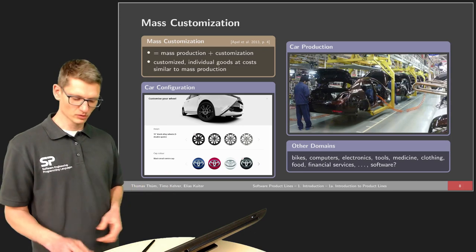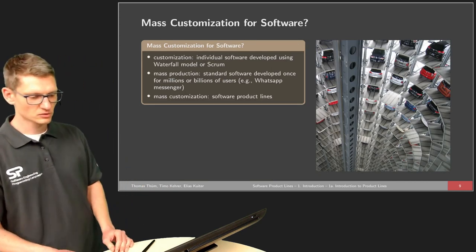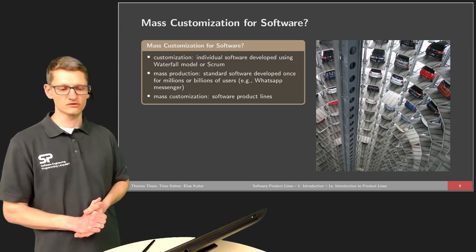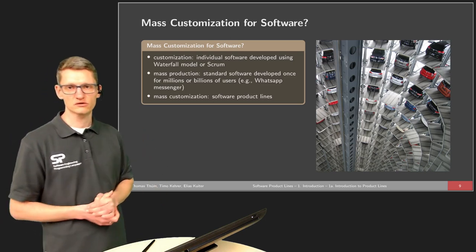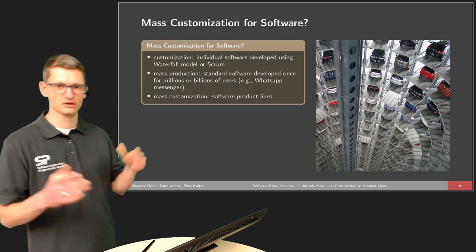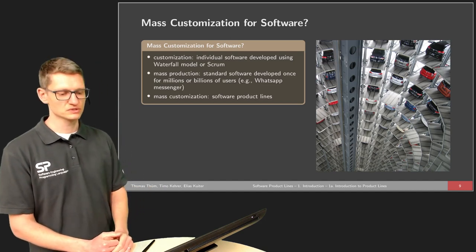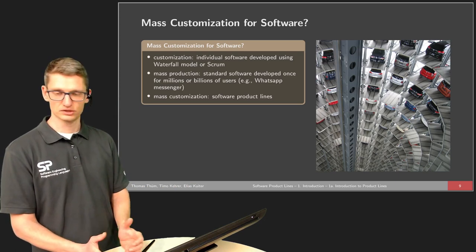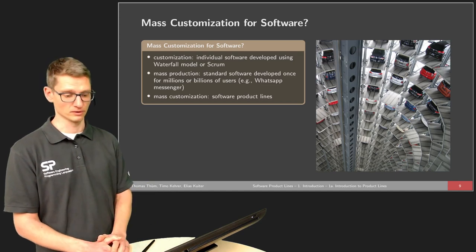How about software? We want to talk about software product lines. When it comes to mass customization, let's look at what customization means for software. This is actually the standard process of developing software. When it comes to the waterfall model, V model, Scrum, or other techniques, you're typically producing software customized for a particular customer. You can start from scratch for every customer, but of course this will not scale very well.